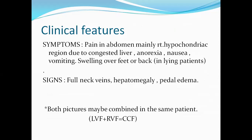Clinical features of right ventricular failure: symptoms include pain in abdomen, mainly in the right hypochondriac region due to a congested liver, and there is anorexia, nausea and vomiting. Swelling is usually seen over the feet or back when the patient is in a lying position. Signs are full neck veins, hepatomegaly, and pedal edema. When both pictures of left ventricular failure and right ventricular failure are combined in the same patient, the resultant is congestive cardiac failure.